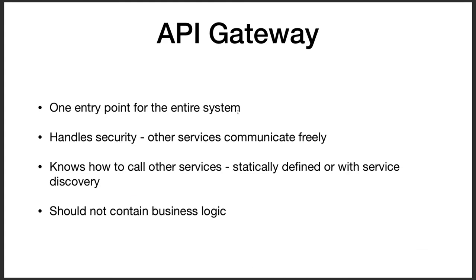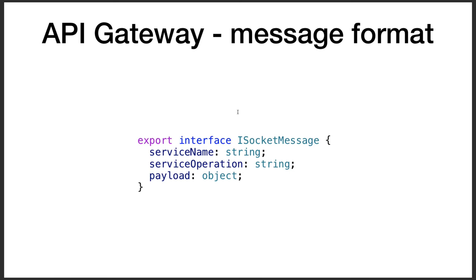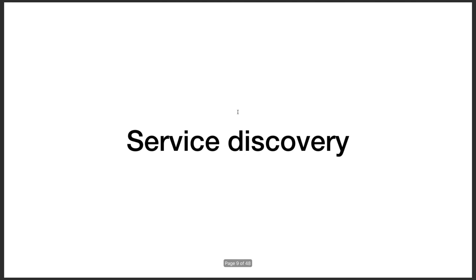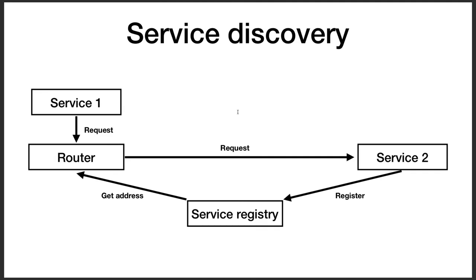The API gateway is a single entry point for the entire system handling security and service communication. AWS API gateway, Azure, and Google Cloud GCP all provide these features so you don't need to build your own. If you write your own, you provide a payload specifying that when a request comes in it will be forwarded to a particular service. The API gateway handles request routing and service discovery.